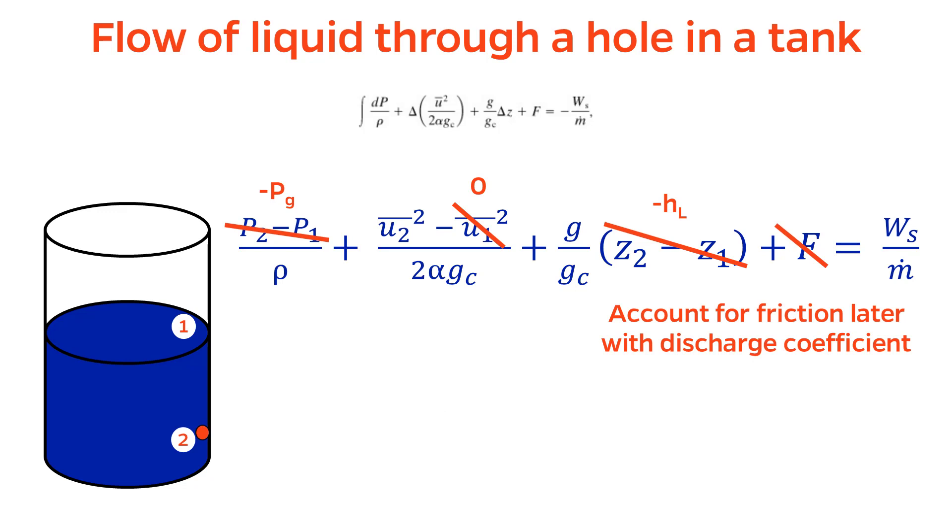Just like we did before, I'll account for friction with the discharge coefficient, so I'll cancel it for now, but I'll come back to it later. Finally, there is still no shaft work, so the last term cancels.